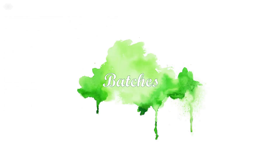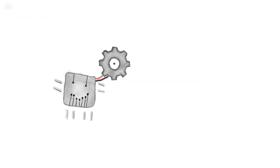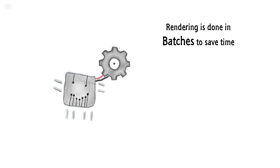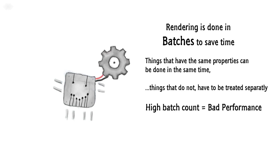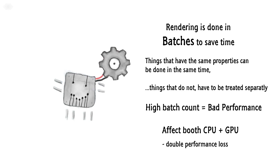Batches. When you render an object, the system works by doing this in batches to save time. Things that have the same properties can be done at the same time; things that are not the same have to be treated separately. One of the biggest problems with performance in a game is that the batch count is too high. The batching is used by both the CPU and the GPU, so you can see it as a double performance loss if you have too many batches.